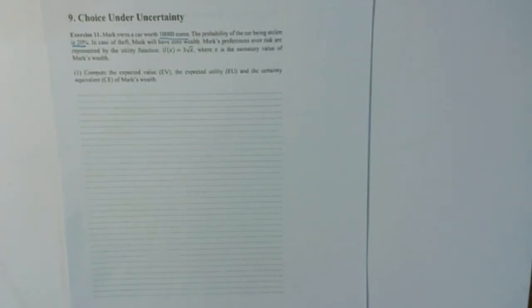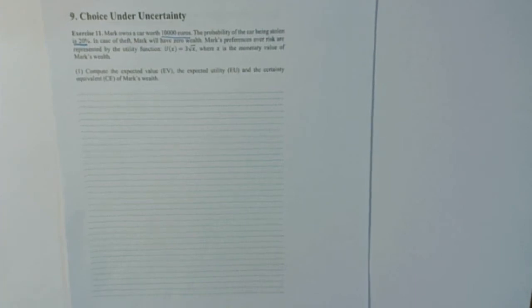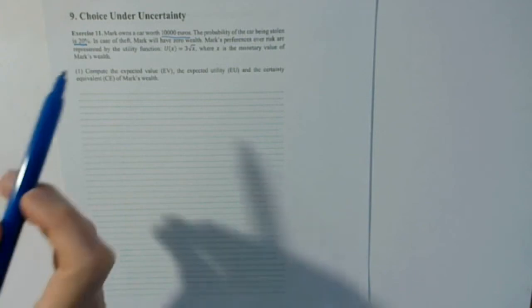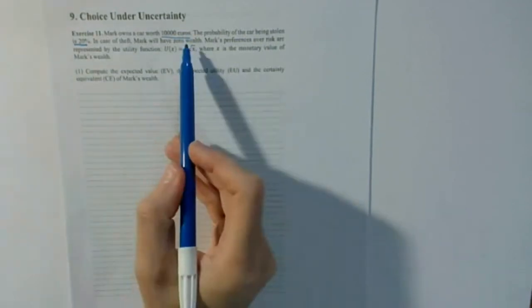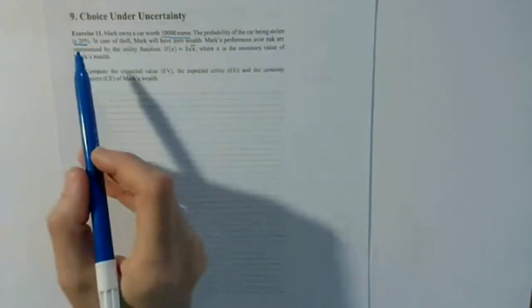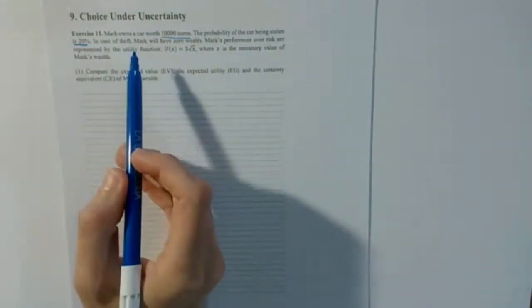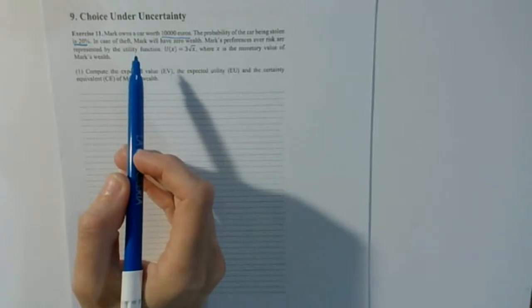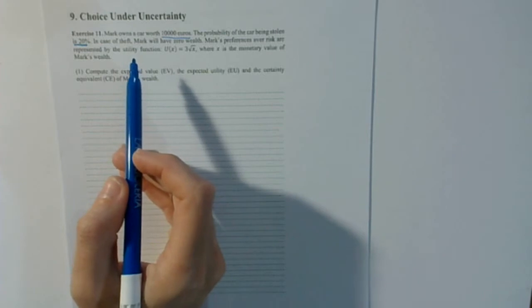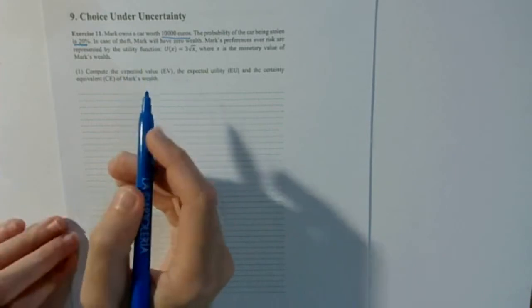Welcome to exercise 11, chapter 9: choice under uncertainty. We have Mark, who owns a car worth 10,000 euros. The probability of the car being stolen is 20%, and in this case Mark will have zero wealth. Mark's preferences over risk are represented by the utility function 3 times the square root of x, where x is the monetary value of Mark's wealth.